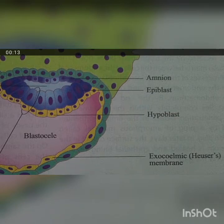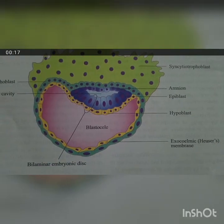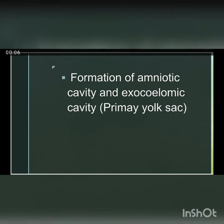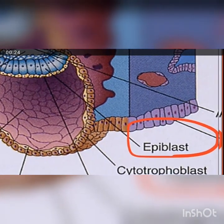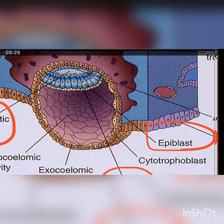These two layers — epiblast and hypoblast — actually form a bilaminar disc. The next event is the formation of two cavities: the amniotic and exocoelomic cavities. By the ninth day, formation of the amniotic cavity and exocoelomic cavity is done with the contribution of epiblast and hypoblast cell layers. Once the embryoblast is differentiated, a smaller cavity is formed within the epiblast layer, which later becomes a larger cavity known as the amniotic cavity.